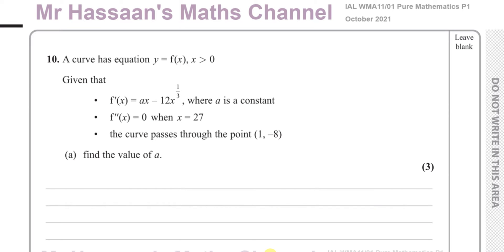Welcome back to Mr Hassan's Maths channel. This is the final question, question number 10, from the Pure Mathematics P1 October 2021 International A-level session. This question is about integration, differentiation, and a bit of detective work. We're given a function y = f(x) where x is greater than zero.